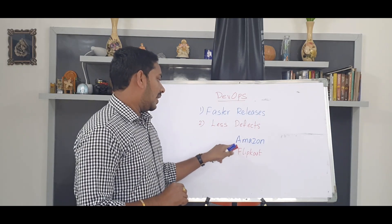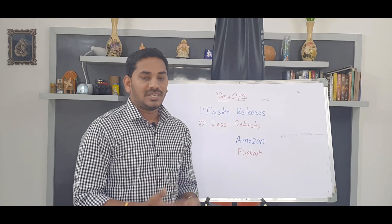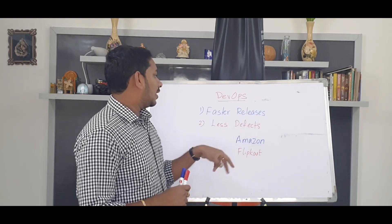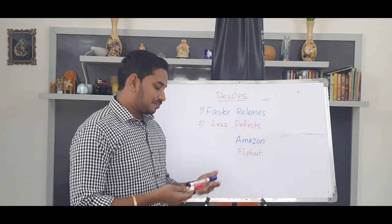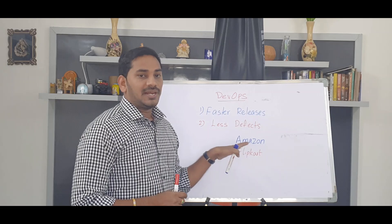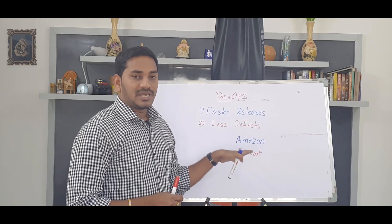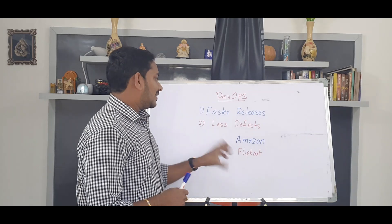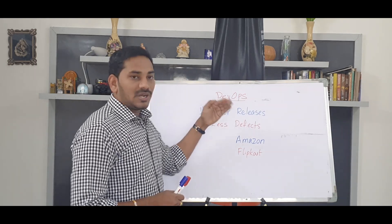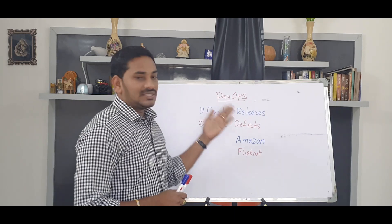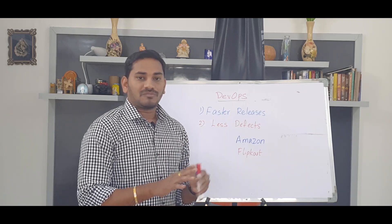Consider two companies: Amazon and Flipkart. These two are huge competitors in the market. If Amazon releases a new feature fast with fewer defects in every product, it will dominate. The features will reach the market very fast with no defects and high customer satisfaction — the product will be very stable.